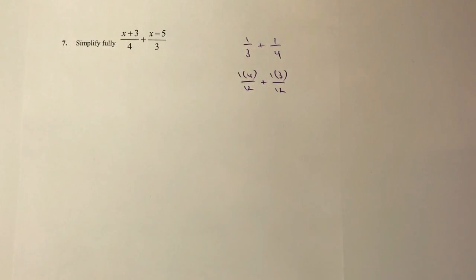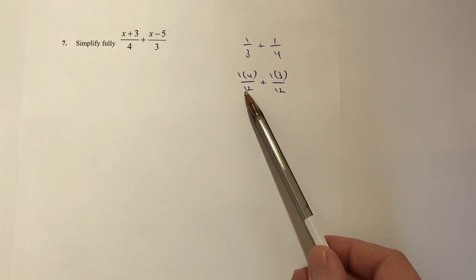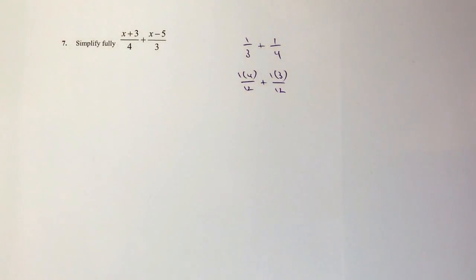The way I've done that is I've said, what have I got to multiply that 3 by to get to 12? Well, it must be 4 times, so I multiply the numerator by 4. That's the same principle I'm going to use with this algebraic expression.